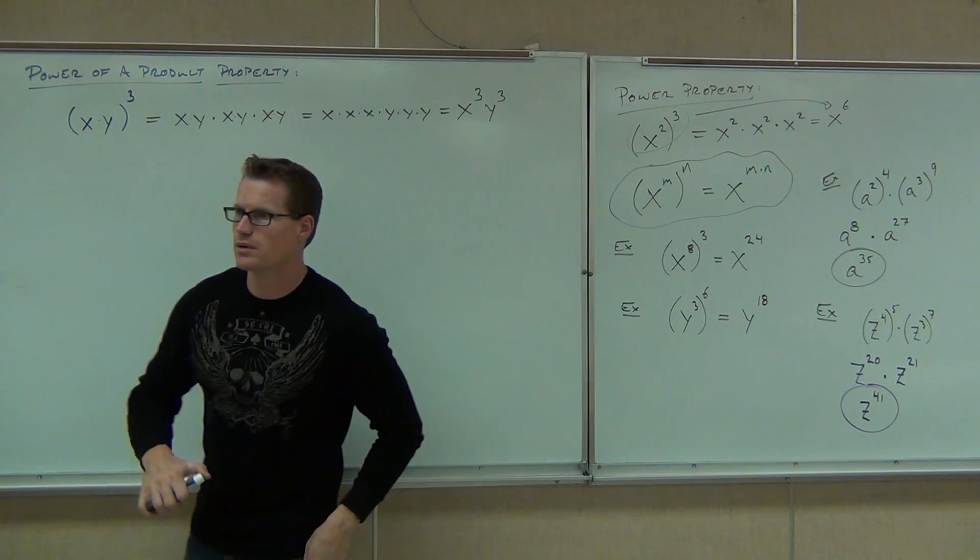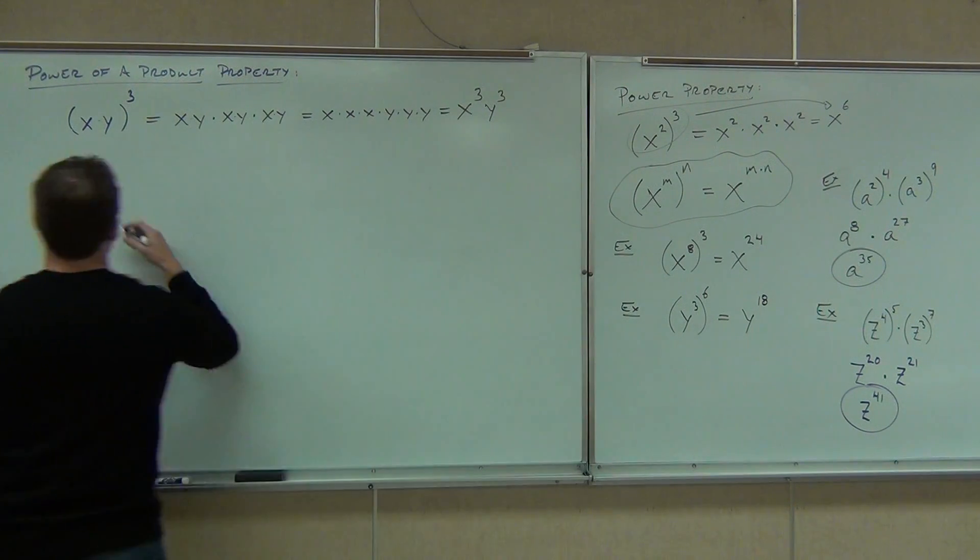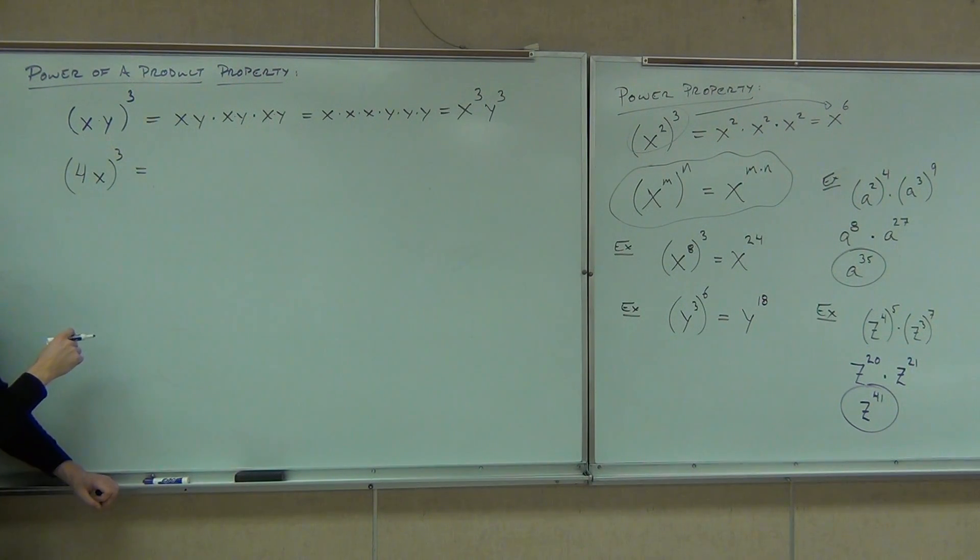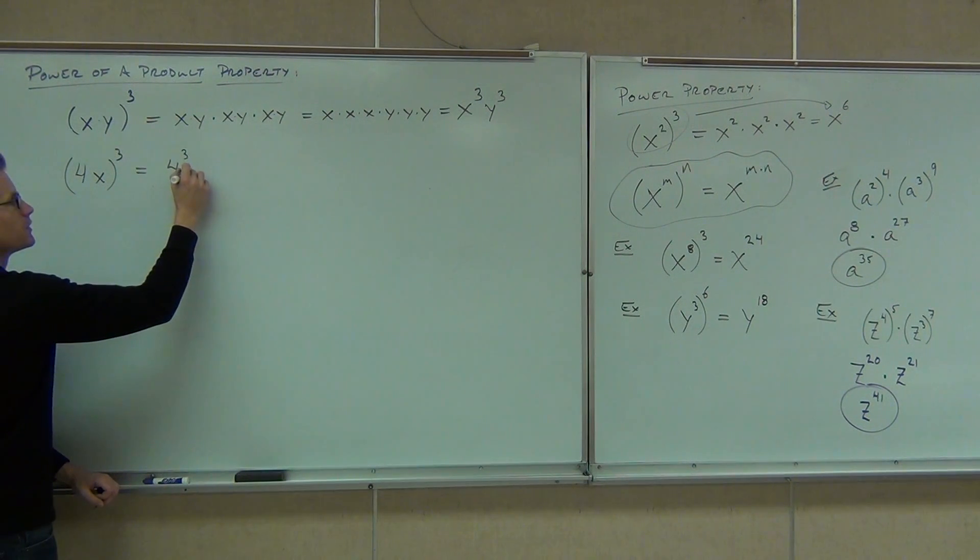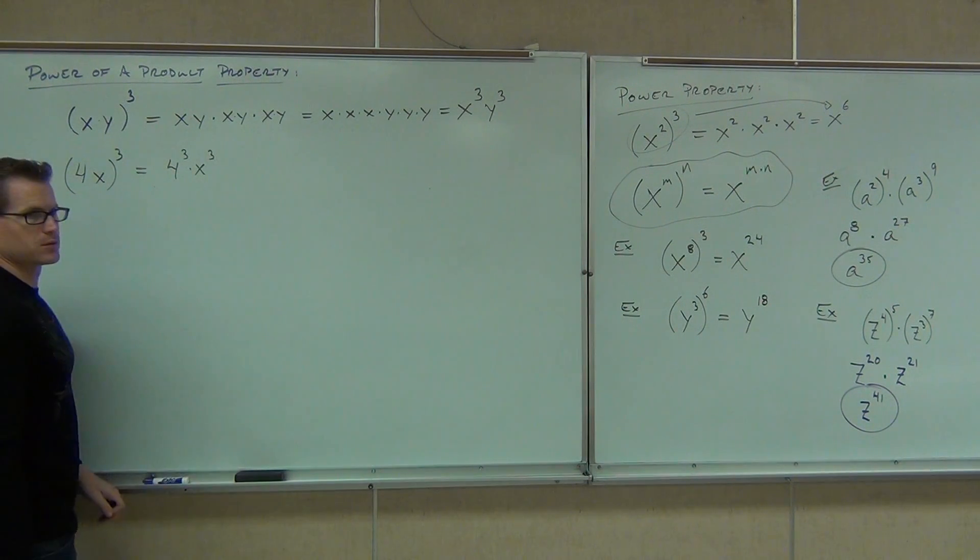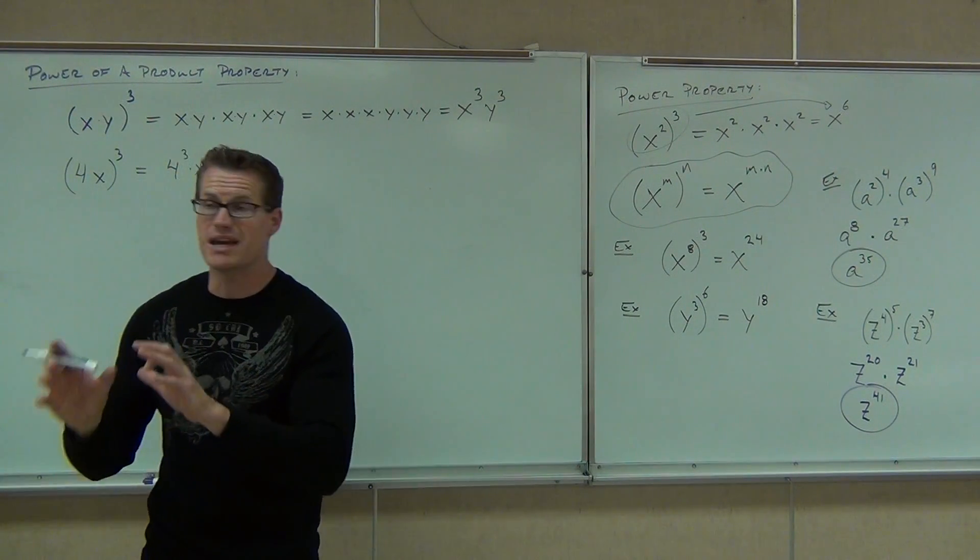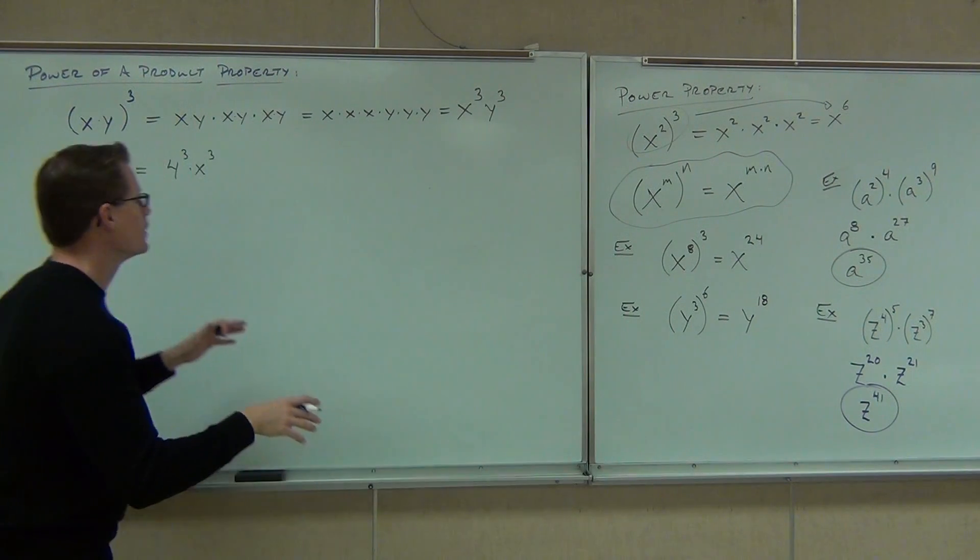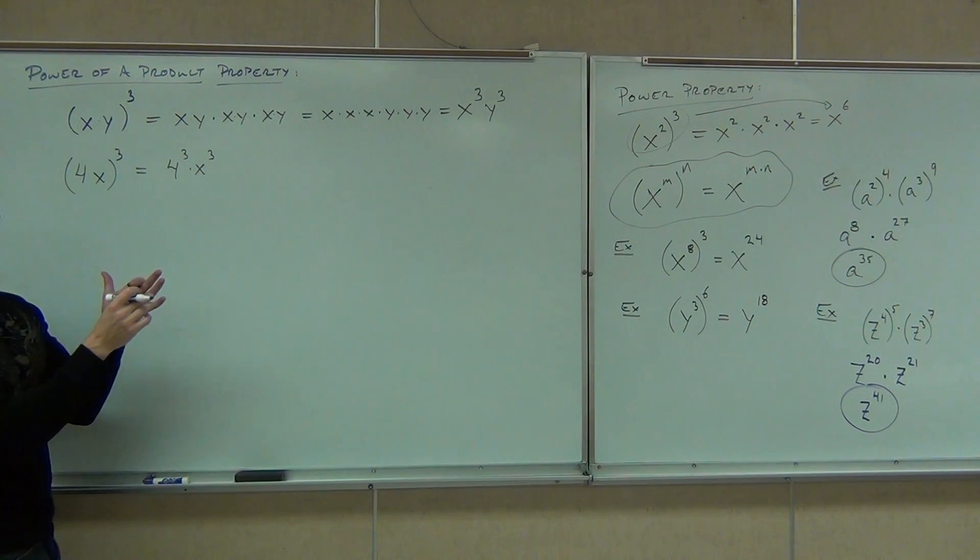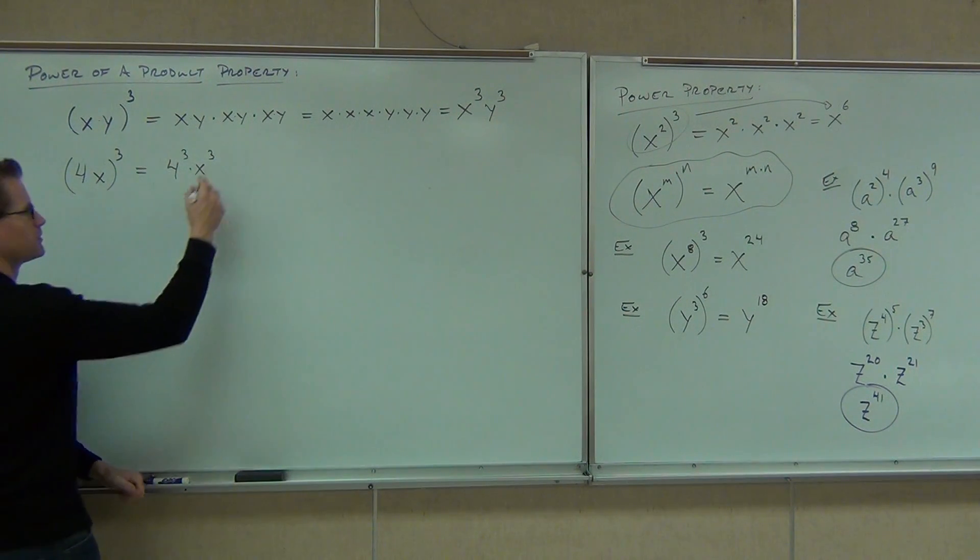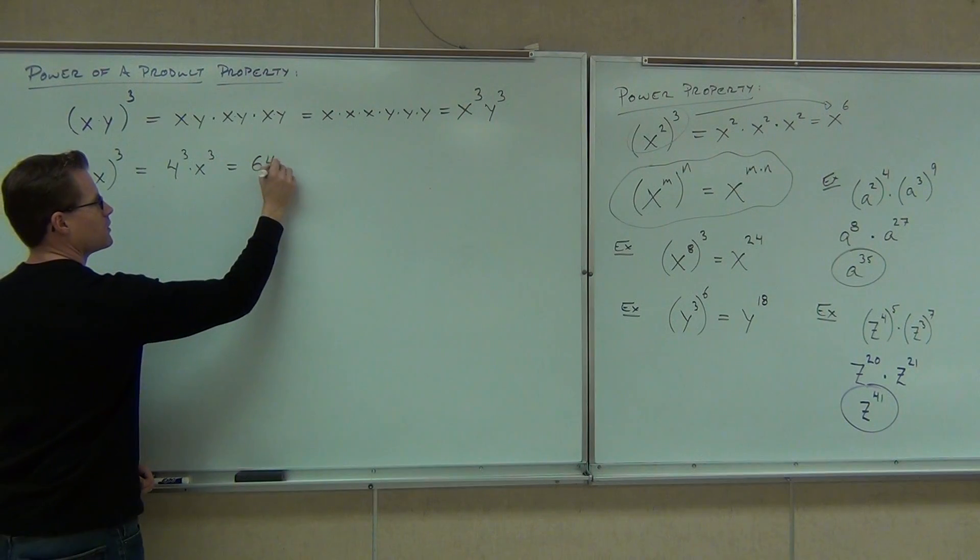And you had one more question. Instead of variables, if it was a number, it would be the same thing? If you have 4x to the third power, well that's still being multiplied, right? So that means you're going to have 4 to the third x to the third. It's going to go to everything up there. You got it? Everything's being multiplied. So yeah, you cannot forget about those numbers. That's really actually a really important point. And then 4 to the third, well you can figure that out. 4 to the third is 4 times 4 times 4. How much is that? 64. That would be 64 x cubed.